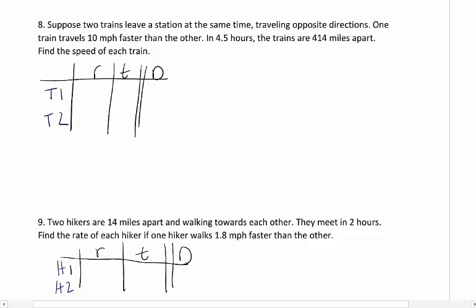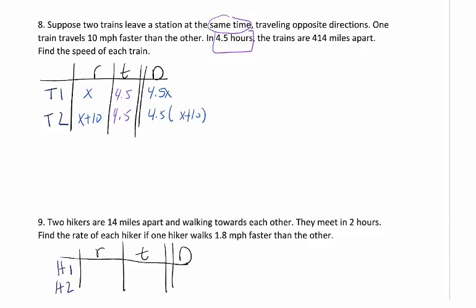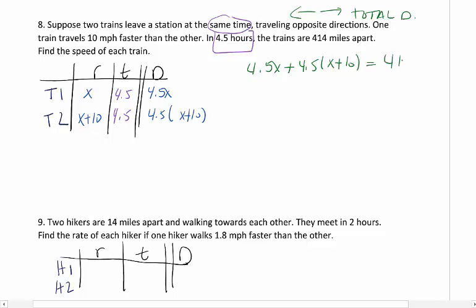We have two trains traveling in opposite directions. One train is traveling 10 miles per hour faster than the other. So call one of their rates x and one will be x plus 10 because it's faster. Key here is in 4.5 hours - they both left at the same time and then they went 4.5, so their times actually match. I'm going to multiply across because that's my column that I have left. The trains are going in opposite directions, so this is a total distance problem, which means I'm going to add them together. So I have 4.5x plus 4.5 times the x plus 10 equals 414.